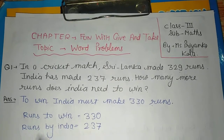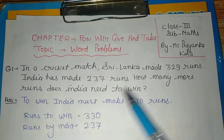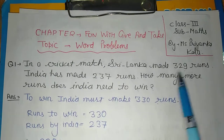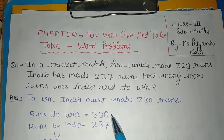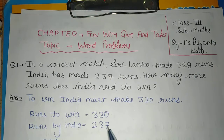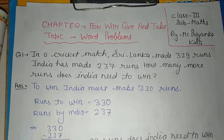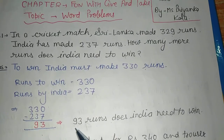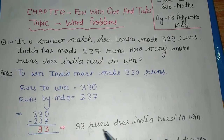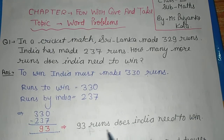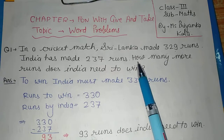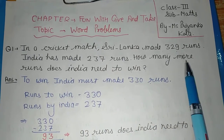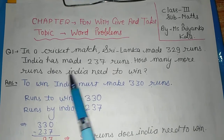In this question, the statement is: runs needed to win. Sri Lanka made 329 runs to win, and India has made 237. Because there is a comparison, you will subtract — the answer is 93. So India needs 93 runs to win.